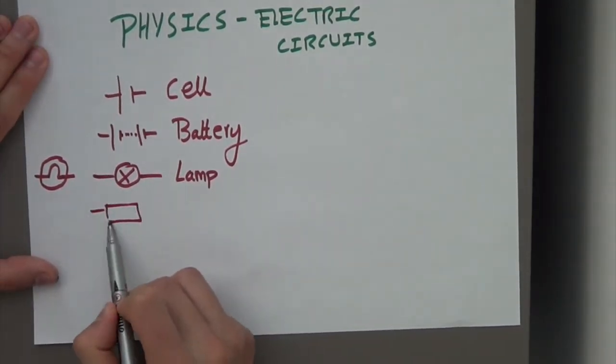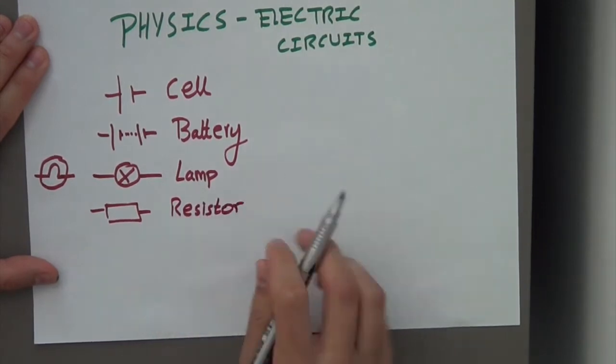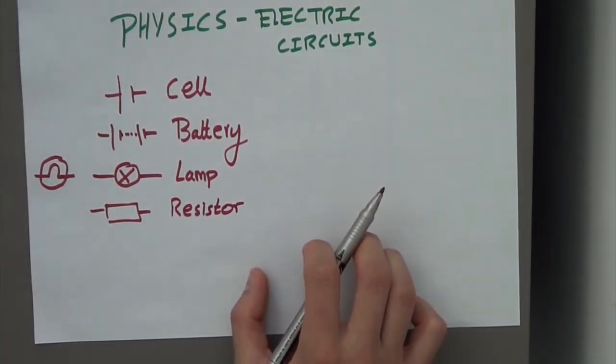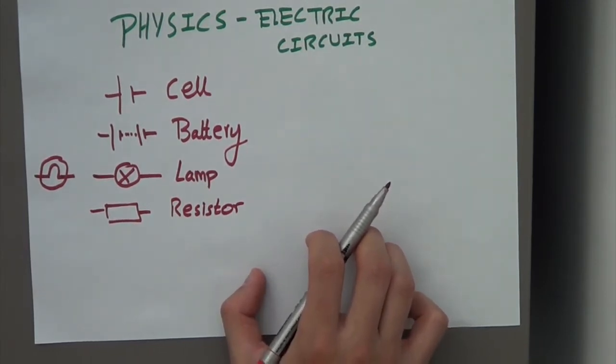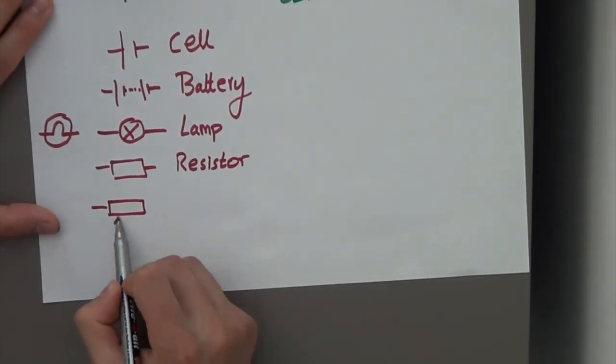What about this one? This is a resistor. This is what blocks current or resists current. Current is the flow of charged particles or electrons which travel around the circuit.